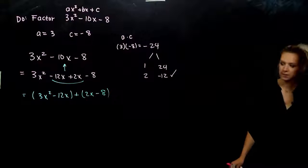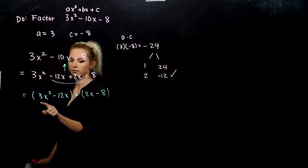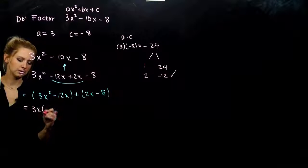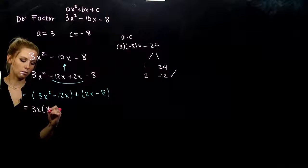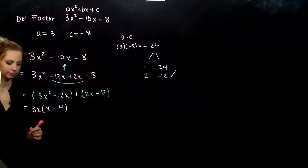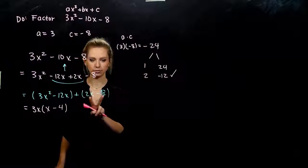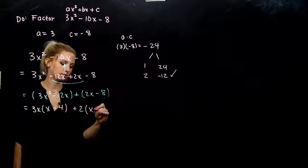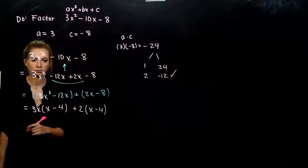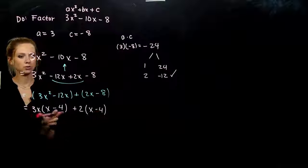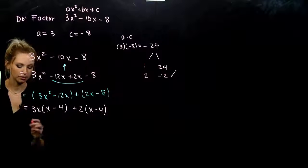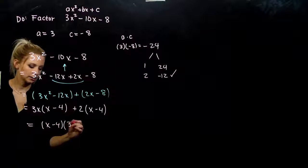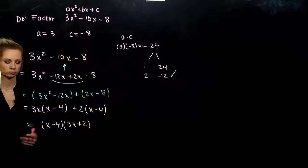What do we ask? Common between the first two that we can take out of both is a factor of 3x. And when we do that, what are we left with? I've got x minus 4. Common between the second two that we can take out is a factor of 2. What are we left with? x minus 4. And now, common between these two that we can take out of both is that entire quantity, x minus 4. And when we do that, what are we left with? 3x plus 2. Factored.